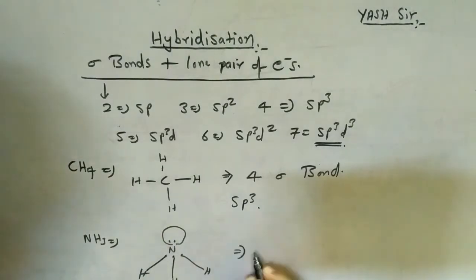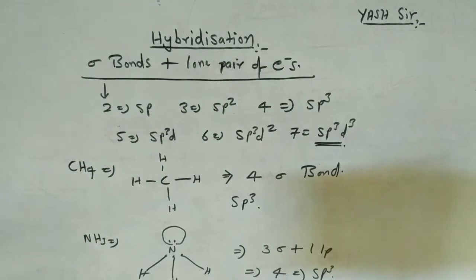So its hybridization will be 3 sigma bonds plus 1 lone pair. Total is 4. So hybridization will be sp3.